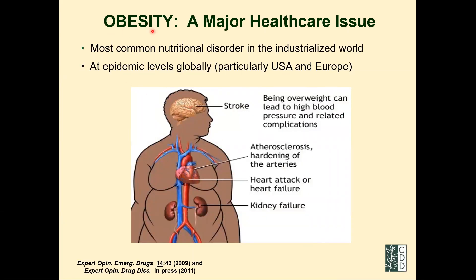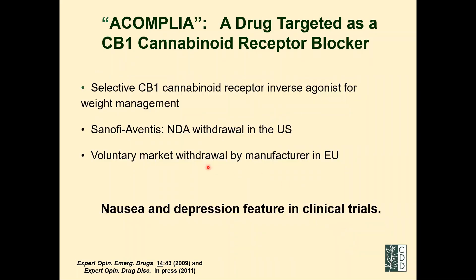We all know obesity is not good — it brings high blood pressure, atherosclerosis, heart attack, kidney failure. Sanofi developed SR141716A as a drug for weight loss under the name Accomplia. It was approved in Europe but not in the United States because the compound had side effects including nausea and depression. The logic was: smoking cannabis makes you hungry, so an antagonist would make you not eat. However, smoking cannabis also makes you happy, so the inverse might make you depressed — raising the question of whether we can get the benefits without the side effects.